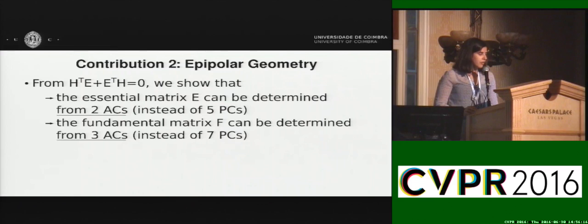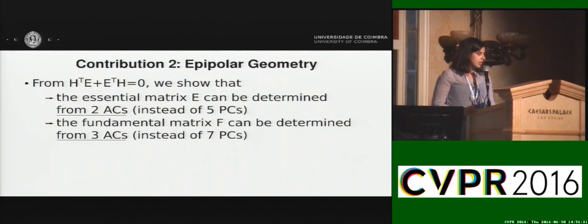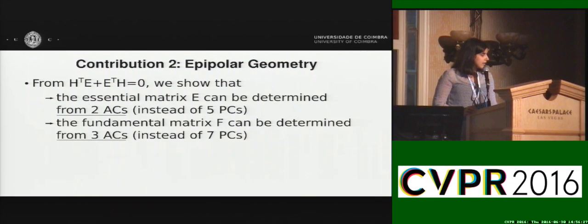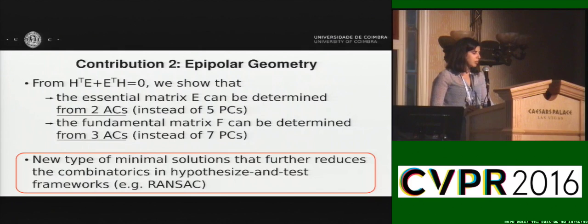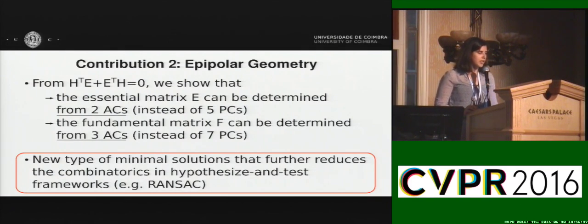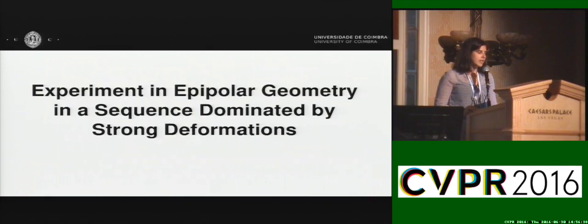Then, from the compatibility equation, we reach our second contribution by showing that the essential matrix can be determined from a minimum of two ACs instead of five point correspondences, and the fundamental matrix can be estimated from three ACs. This is an important result as it provides a new type of minimal solutions that significantly reduces the possible number of combinations in RANSAC schemes.